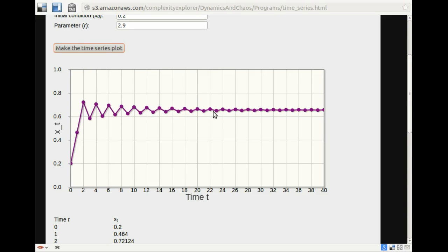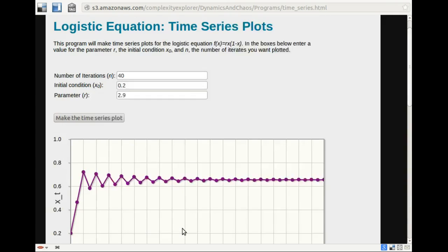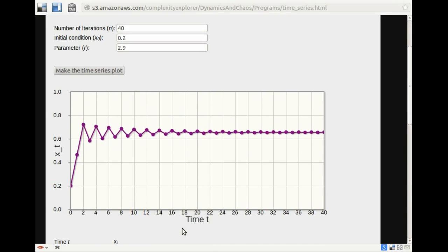but we can see it getting closer and closer to this value. And if I look at numbers, it's going to around .65, .66, something like that. So for 2.9, we have an attracting fixed point.